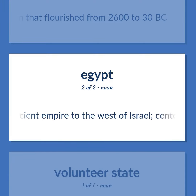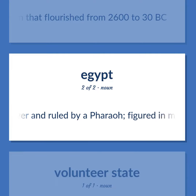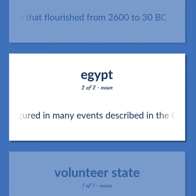An ancient empire to the west of Israel, centered on the Nile River and ruled by a pharaoh. Figured in many events described in the Old Testament.